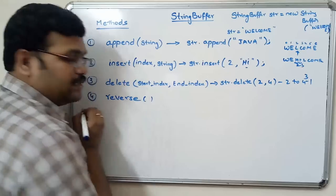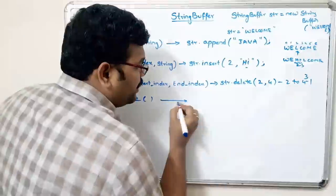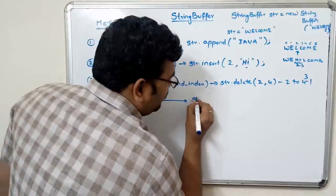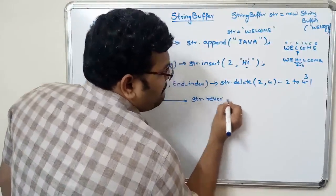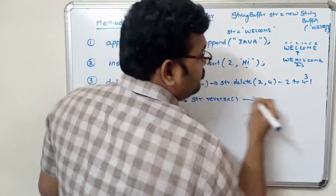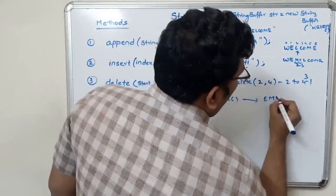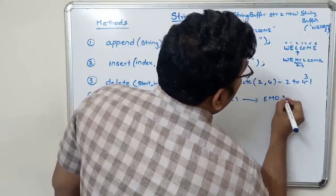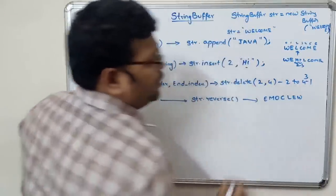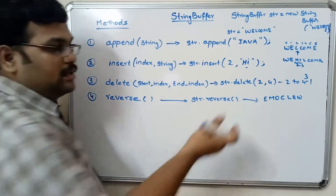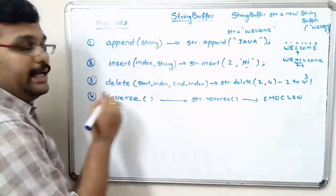The next method is reverse(). There are no parameters for this reverse function. Directly we can use it as str.reverse(), which will give the output in reverse format. So for 'welcome' this would be the reversed format.